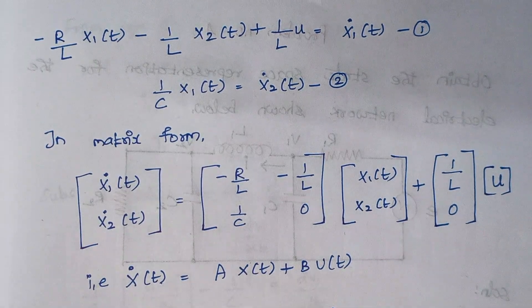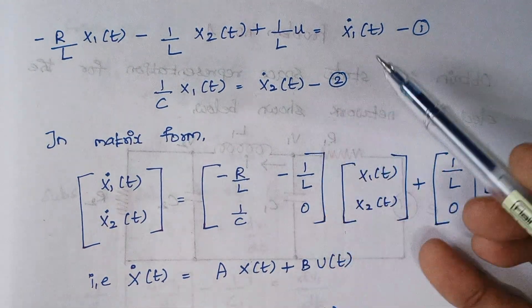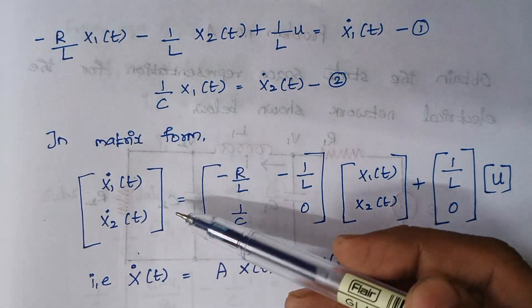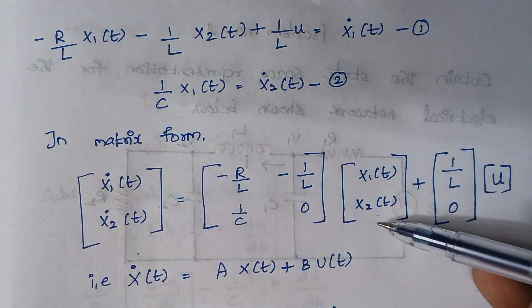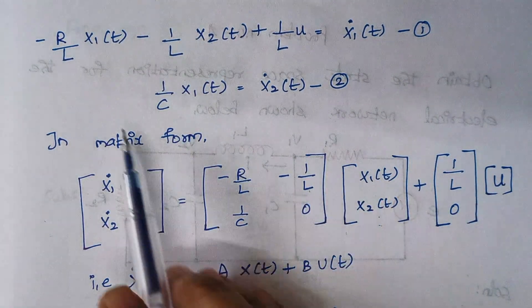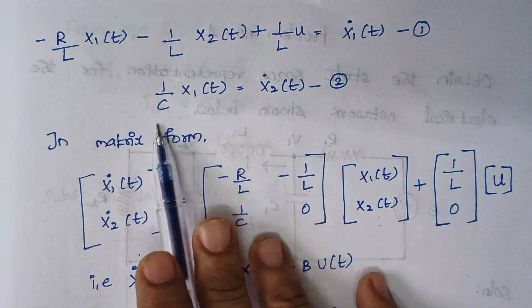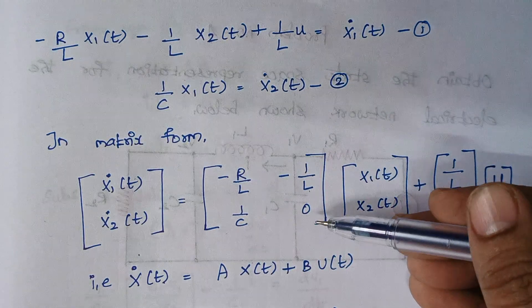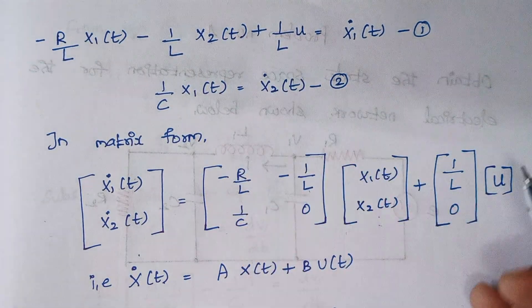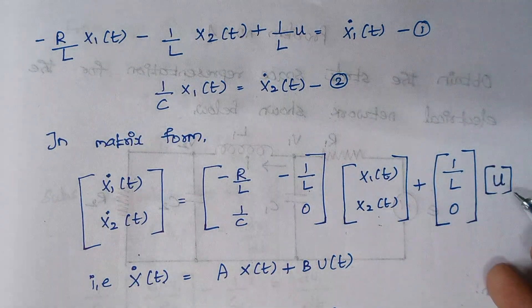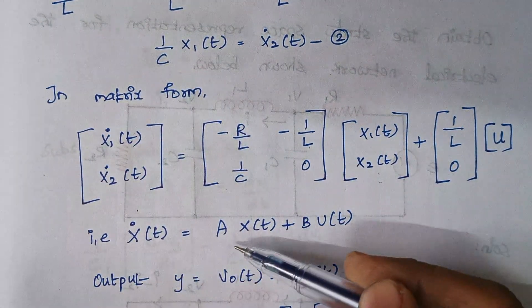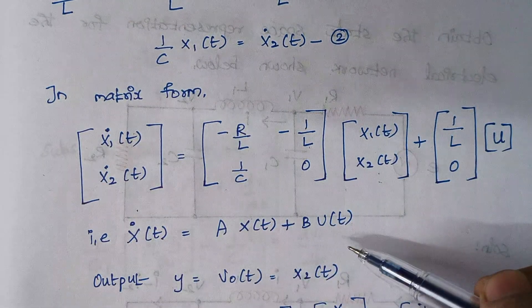Now we write equations 1 and 2 in matrix form. The column matrix [x1_dot(t), x2_dot(t)] equals the system matrix times [x1(t), x2(t)] plus the input matrix times u. The coefficient of x1(t) in equation 1 is −R/L, for x2(t) it is −1/L. In equation 2, the coefficient of x1(t) is 1/C and there is no x2(t) term, so it is 0. The input matrix has 1/L for equation 1 and 0 for equation 2. The standard format is x_dot(t) = A·x(t) + B·u(t).